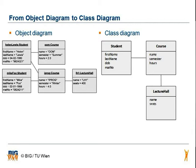For more details we can specify the type of each attribute. First name and last name of a person have the type string. The same counts for name and semester of the class Course and name of the class Lecture Hall. Date of birth of the class Student is of type date. Matriculation number is also of type string, as you can see from the quotes. The attribute hours of the class Course is a float, and the attribute seats of the class Lecture Hall is an integer.